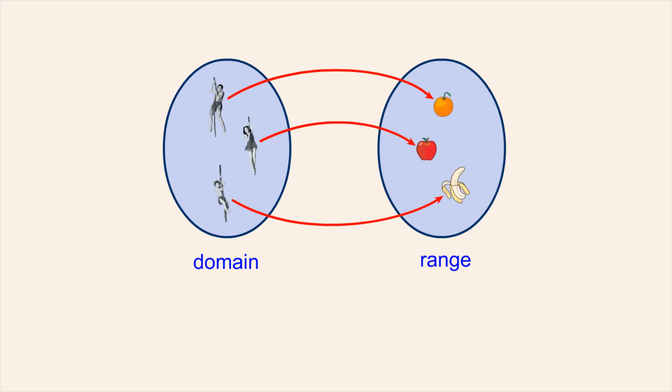We saw that functions can be described by a set of ordered pairs called the graph, where the first element of each ordered pair is a domain element and the second element is the range element to which it is related.